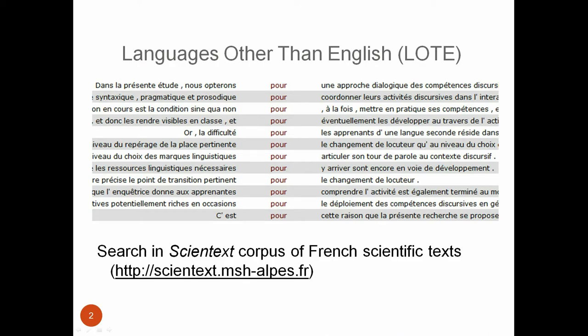What are concordances? Concordances show every instance of a given word in a corpus with surrounding text. Like other corpus linguistic tools, concordances can be generated both for English and for other languages, as in this example, which shows some sample concordances for the French word pour from a corpus of French scientific texts.